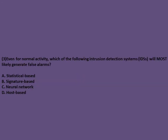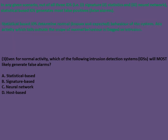Exam question: Which IDS is most likely to generate false alarms even for normal activity? Statistical-based IDS generates the most false positives. It determines normal behavior of the system, and any activity outside the scope of normal behavior is flagged as intrusion. Anything outside the normal scope will be considered intrusion activity.